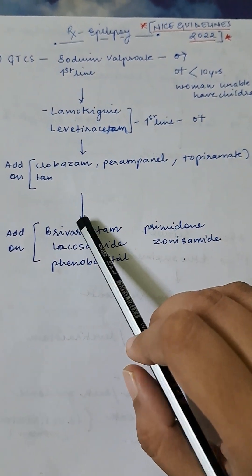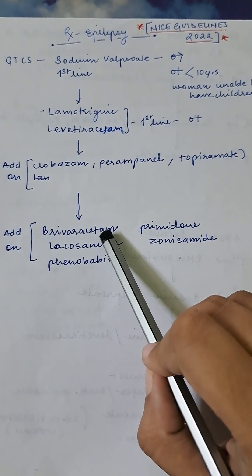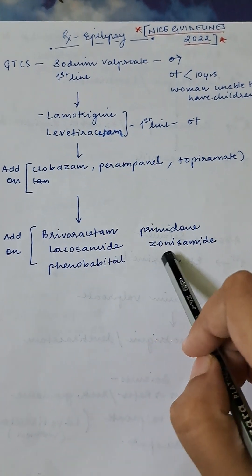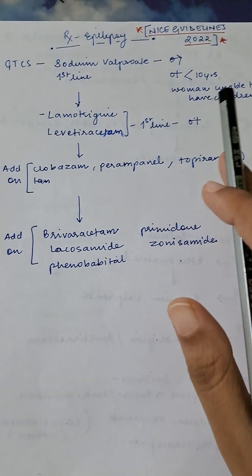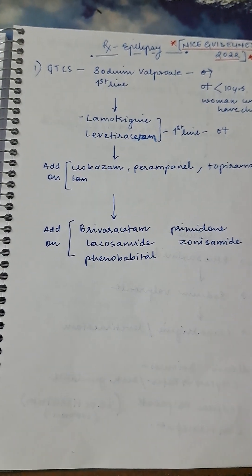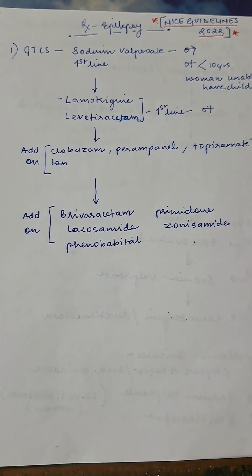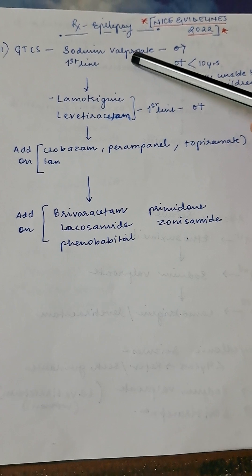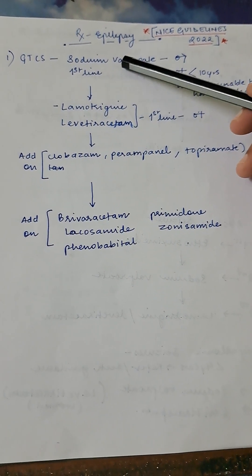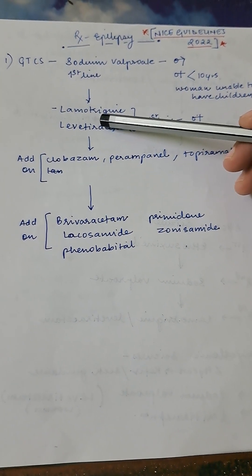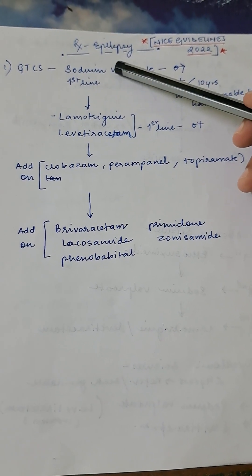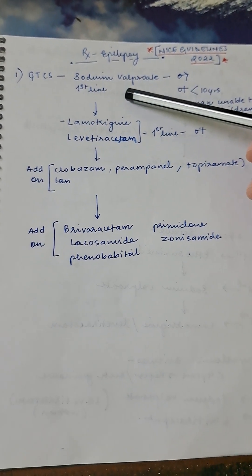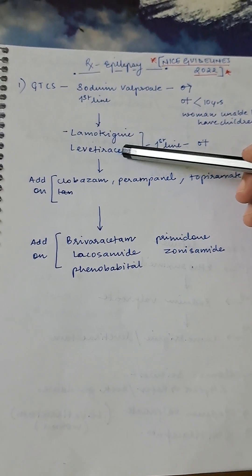Still if it is unsuccessful, then you can add on brivaracetam, primidone, lacosamide, zonisamide, and phenobarbital. During anti-epileptic treatment, NICE guidelines always prefer to follow monotherapy. If one drug is not working or the treatment is not very satisfying and you add the other drug, you cannot abruptly stop the other one. You have to give the second one in full dose and stop the other one gradually. Take care. If this is successful, then we'll continue.